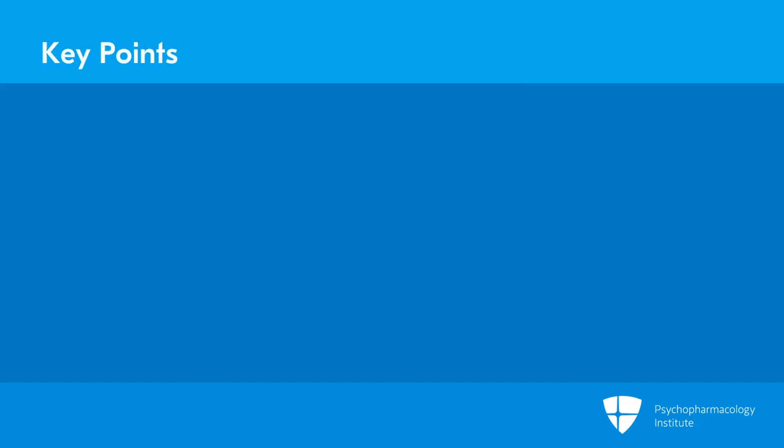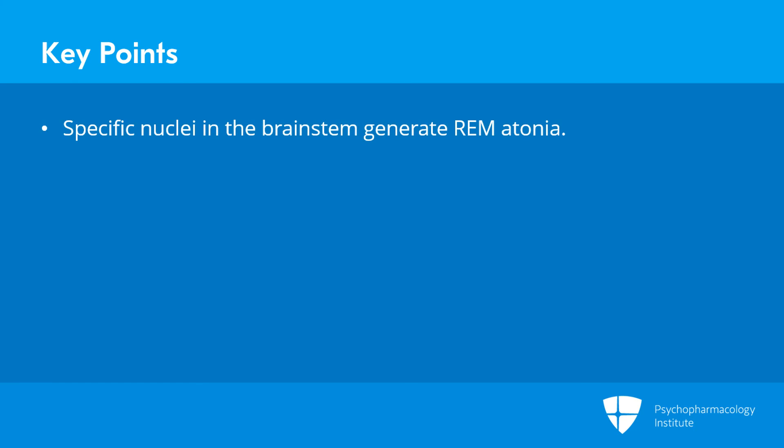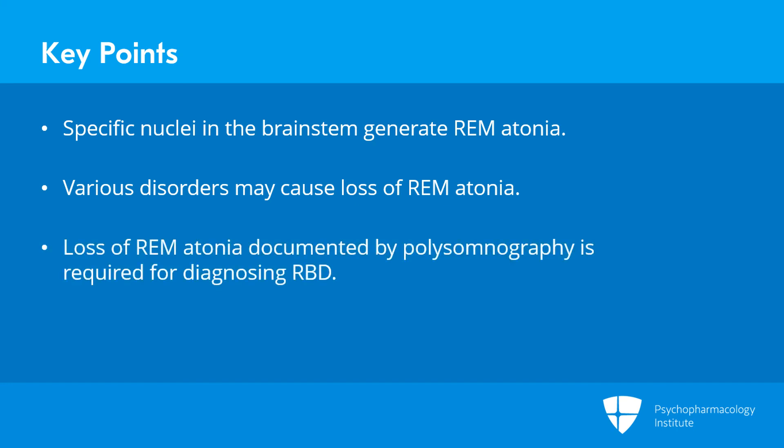The key points are: specific nuclei in the pons and medulla in the brainstem generate the muscle paralysis of REM sleep, called REM atonia. Various neurological and other disorders can damage these brainstem nuclei, causing loss of REM atonia and emergence of RBD. And lastly, loss of REM atonia — an objective finding from polysomnography — is required to diagnose RBD.